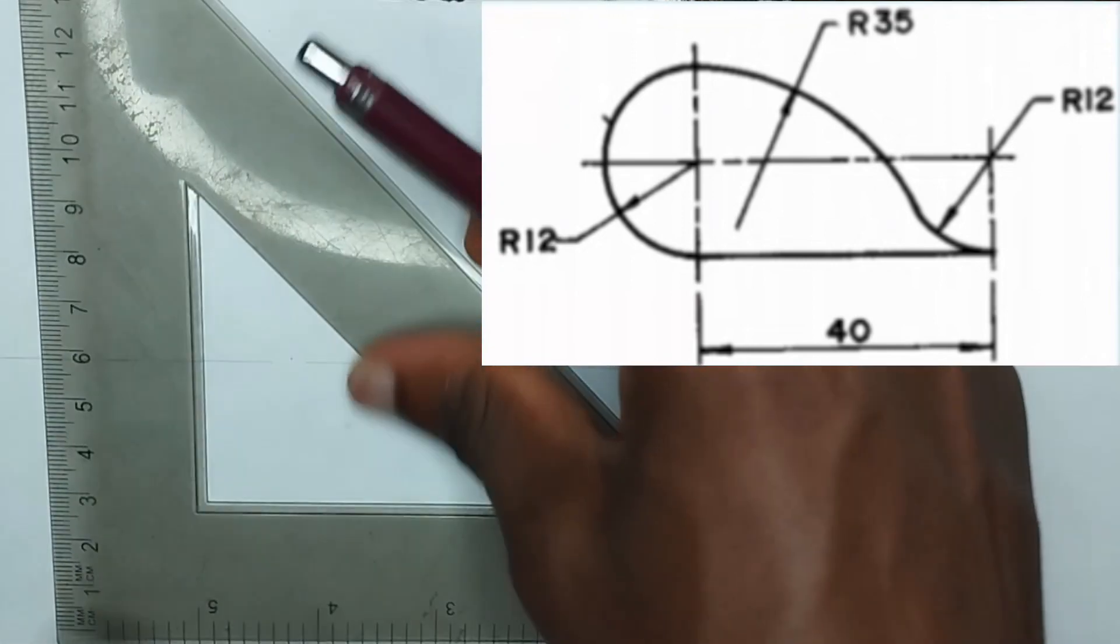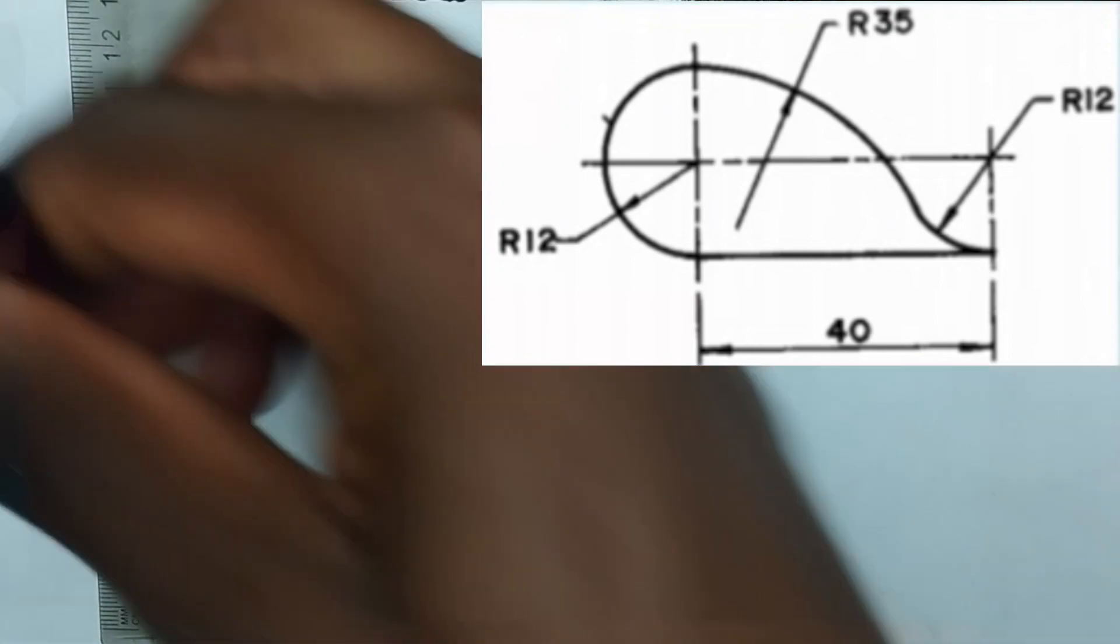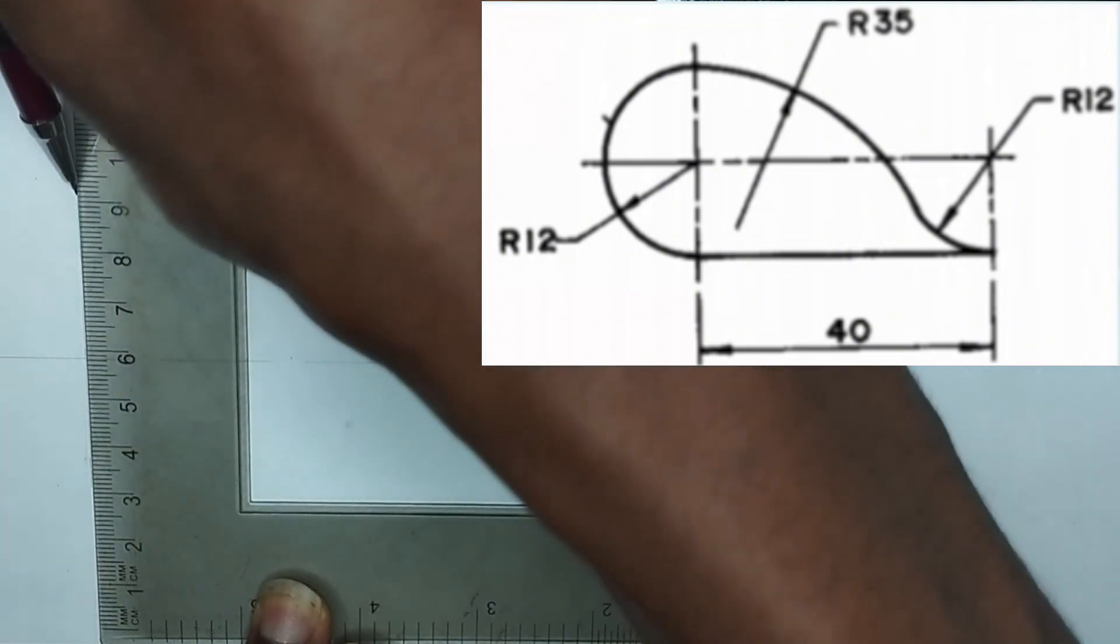Then I'm going to pick my set square and draw a right angle to the line in this manner like this.